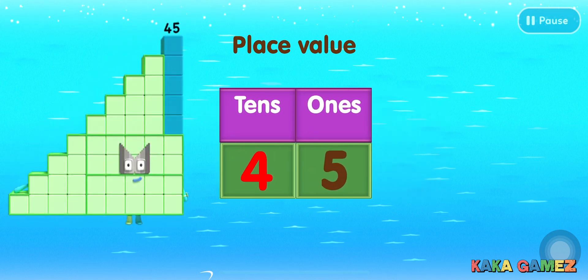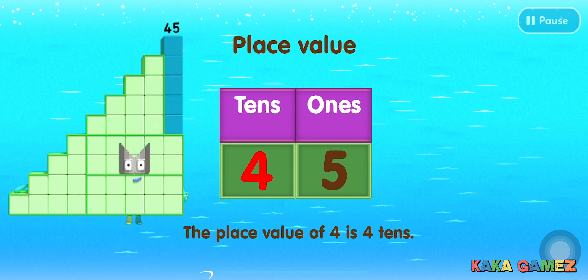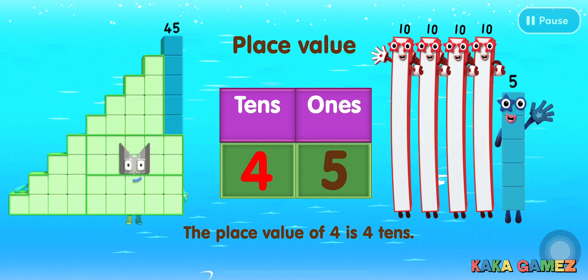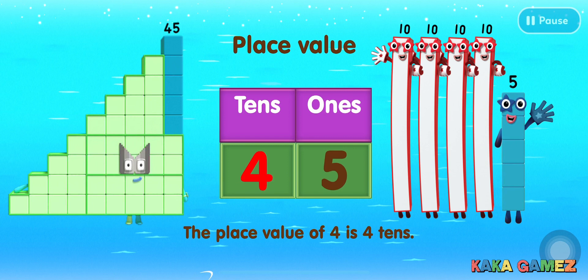In the case of 45, the place value of 4 is 4 tens, which really means 40.